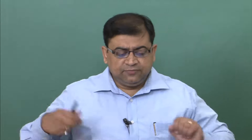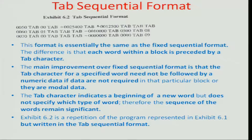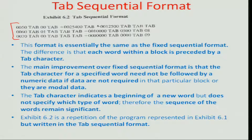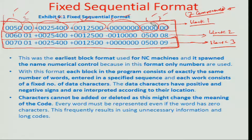What are the problems associated with the fixed sequential format? That gives you the basis for the tab sequential format. If you look at this illustration of the fixed sequential format, one problem is the repeatability of different numbers. For example, the '01' number on block 2 and block 3 are repeating, and the number 0025400 is repeating every time.